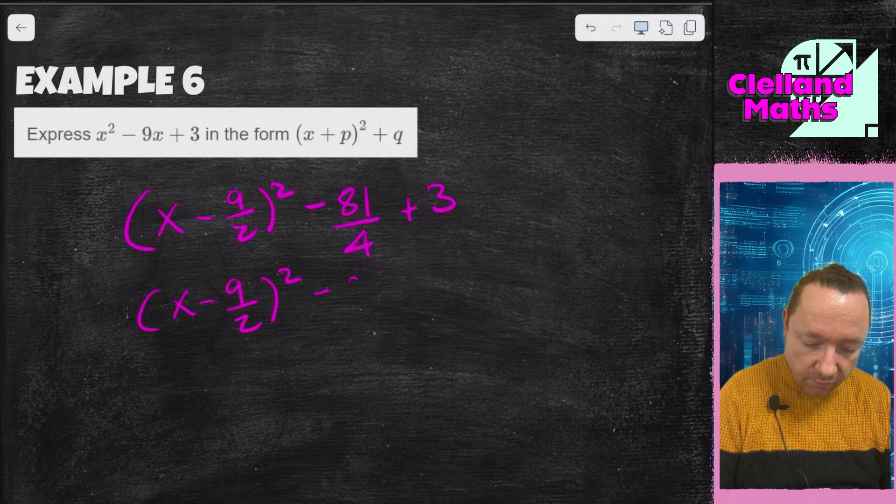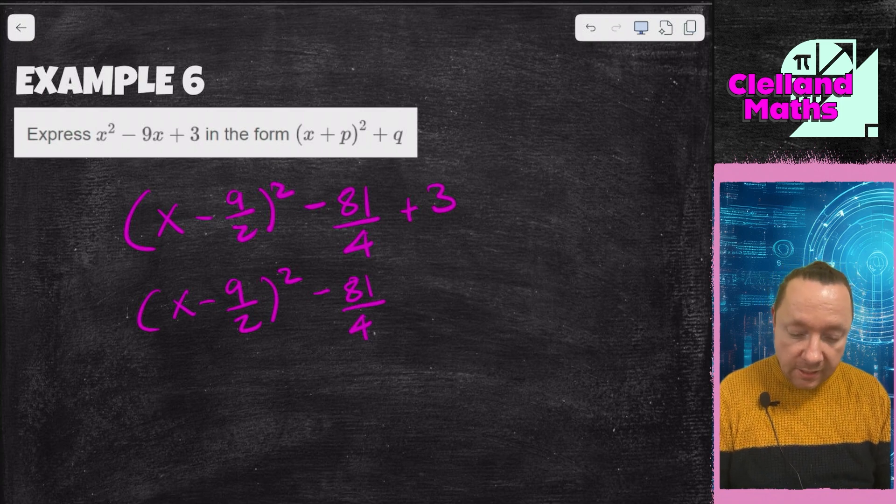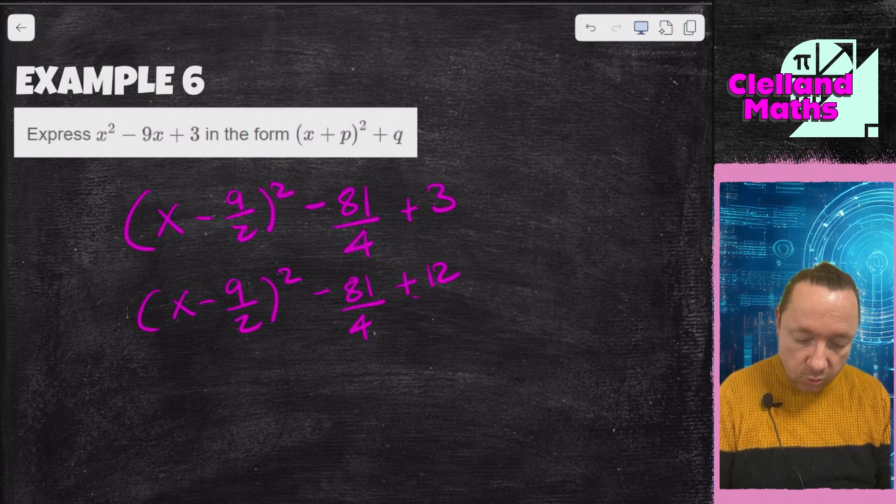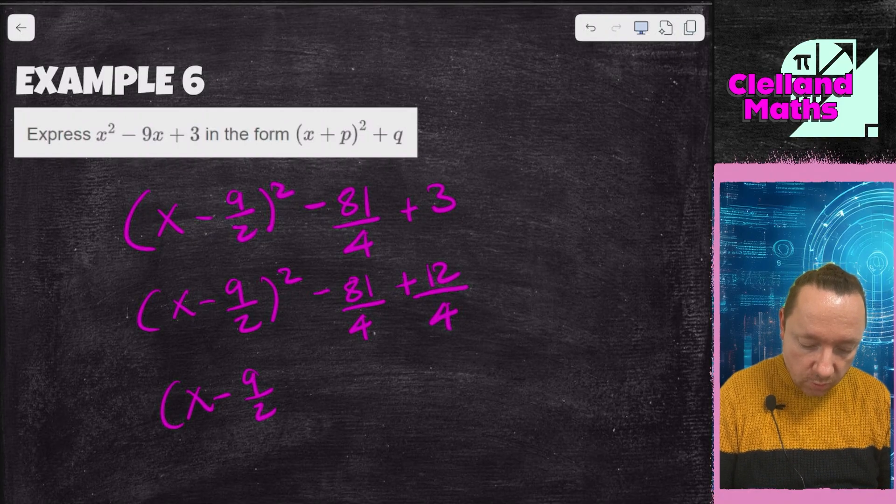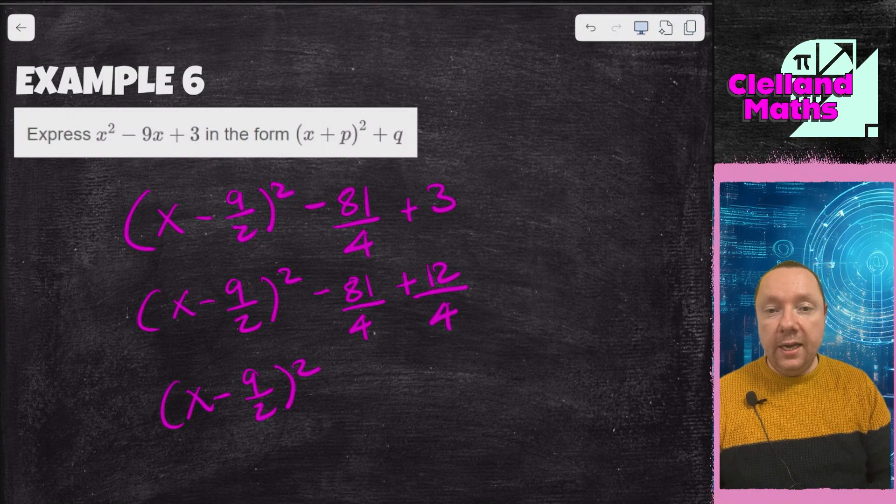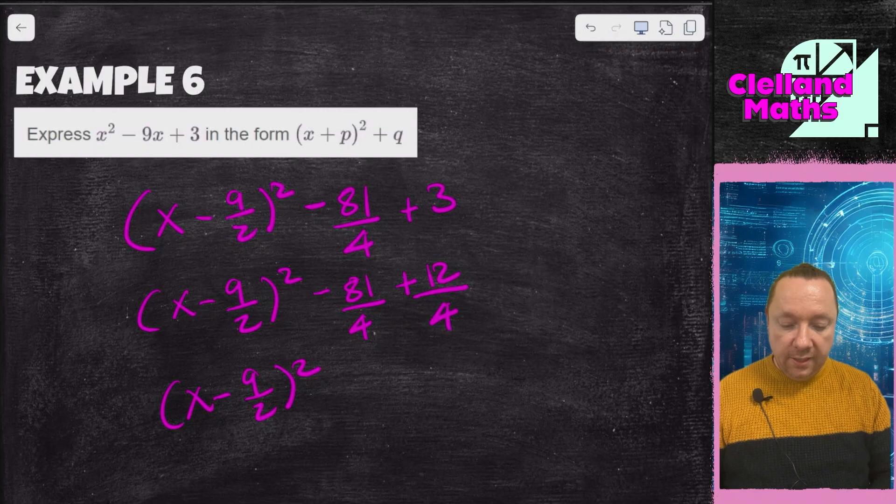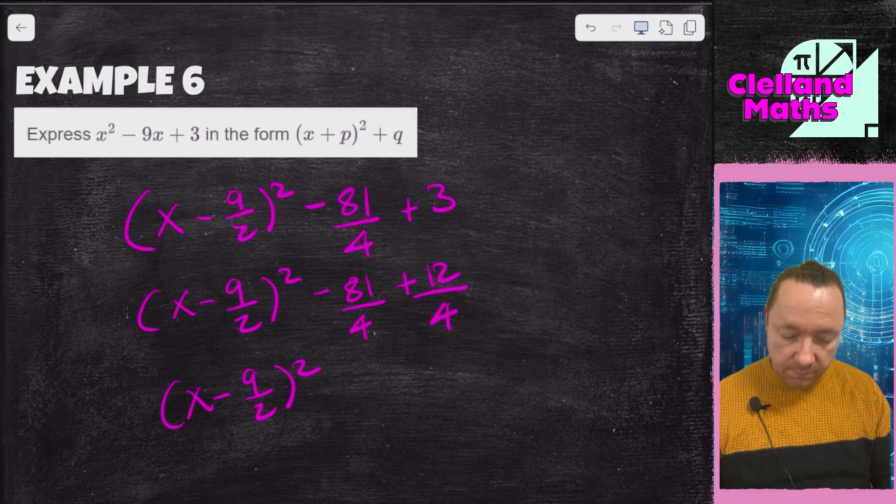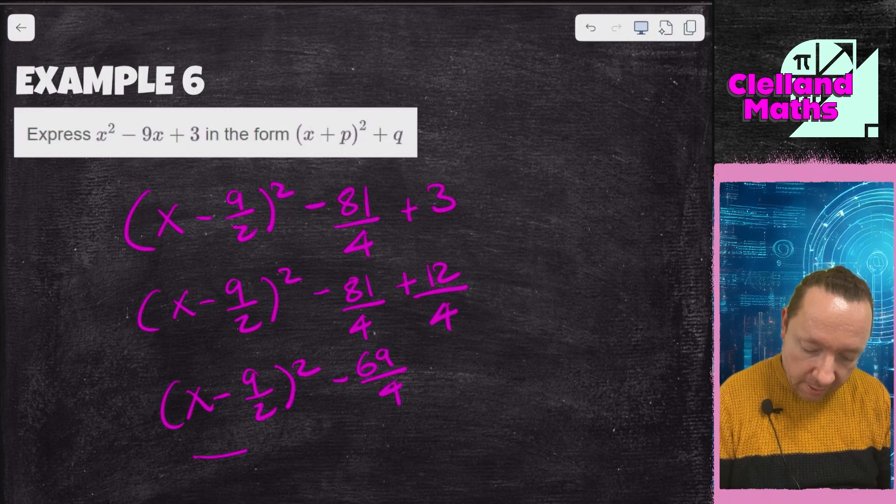We've got minus 81 over 4. 3 is, 3 times 4 is 12, so 12 over 4. So x minus 9 over 2 squared, minus 81 plus 12, that's minus 69 over 4. And we're done there.